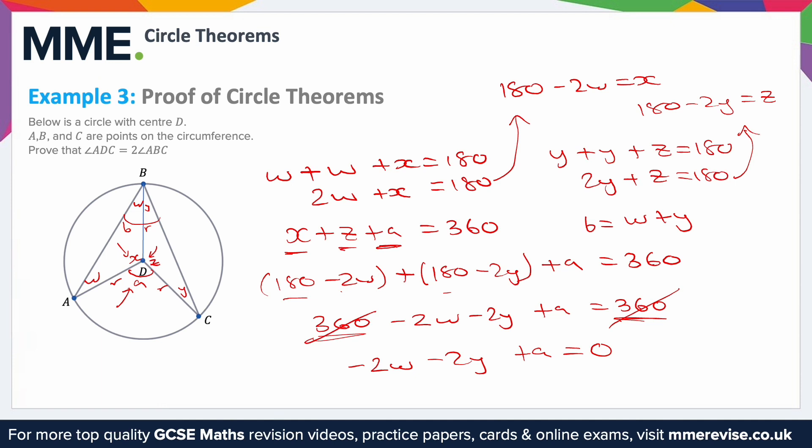You can rearrange this slightly to get a equals 2w plus 2y. Which you can see, we've now got b in terms of w and y, we've got a in terms of w and y. We can factorize this one slightly to be two lots of w plus y, and w plus y is b. So a is two lots of b. So therefore we've proven that the angle here is twice the angle here—so the angle at the center is twice the angle at the circumference, just as the rule asked.